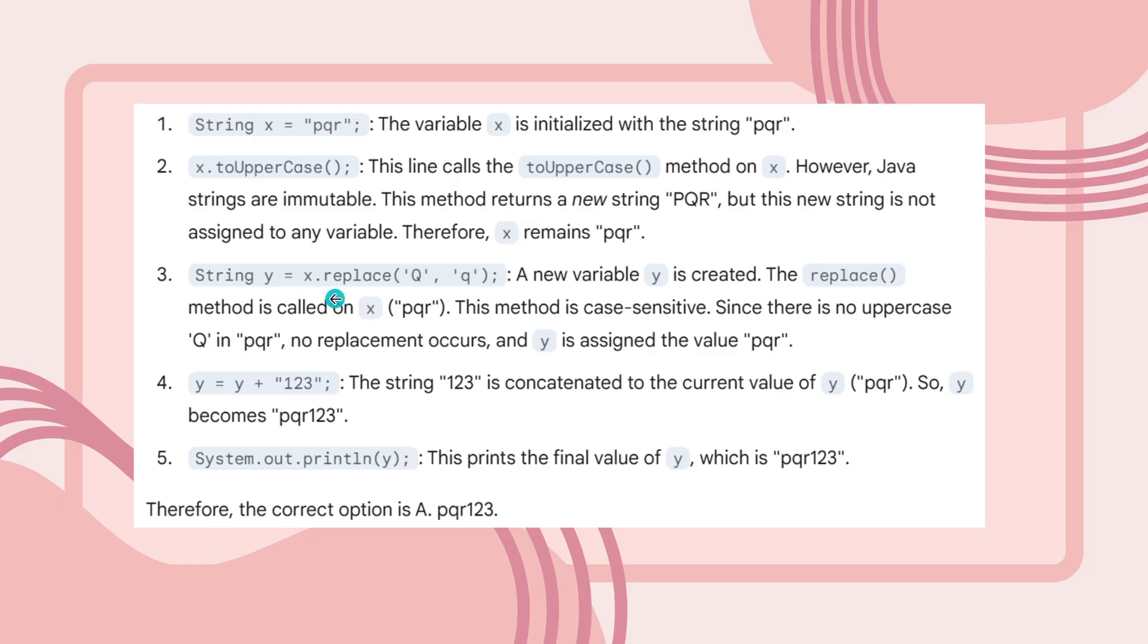Now string y equals x.replace(capital Q, small q). A new variable y is created and the replace method is called on x (PQR). This method is case-sensitive. Since there is no uppercase Q in PQR, no replacement occurs and y is assigned the value PQR. They are asking you to replace capital Q with small q. The x is small PQR, so there is no capital Q to replace. The x remains small PQR only. This is assigned to variable y.